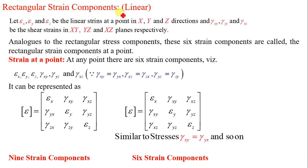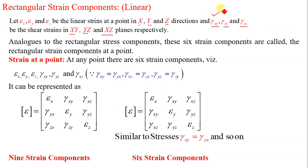Now, rectangular strain components: let epsilon x, epsilon y, and epsilon z be the linear strains at a point in x, y, and z directions; and gamma xy, gamma yz, and gamma xz be the shear strains in the xy, yz, and xz planes respectively. Analogous to the rectangular stress components, these 6 strain components are called the rectangular strain components at a point.